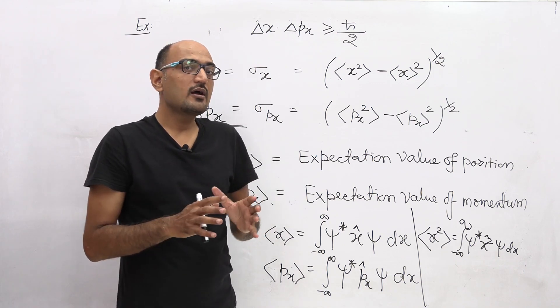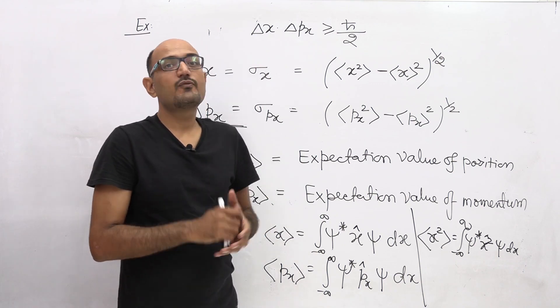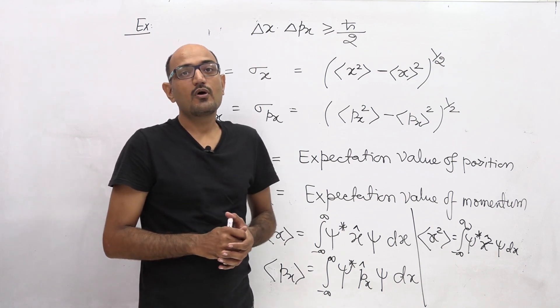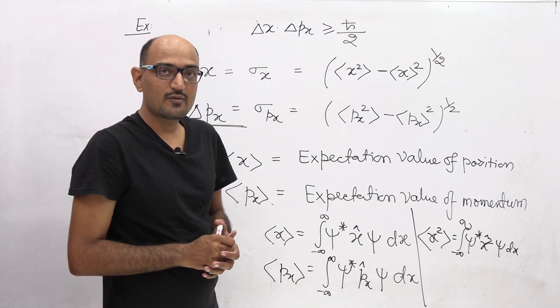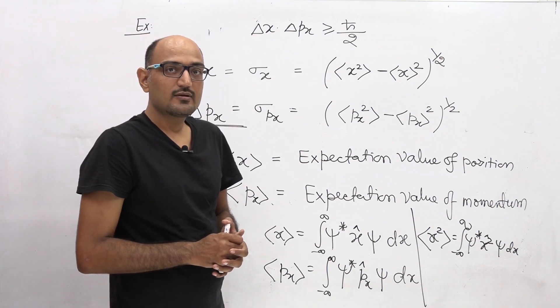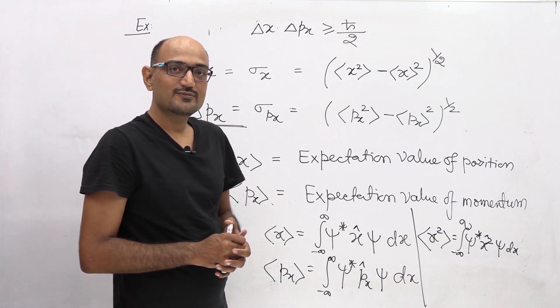So this was our mathematical formalism of the Heisenberg Uncertainty Principle. Thank you.